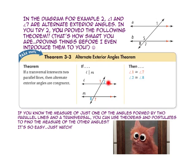Since angle 2 and angle 8 are alternate exterior angles, they are also congruent. If you know the measure of just one angle formed by two parallel lines and a transversal, you can use the theorems and postulates to find the measure of every other angle.